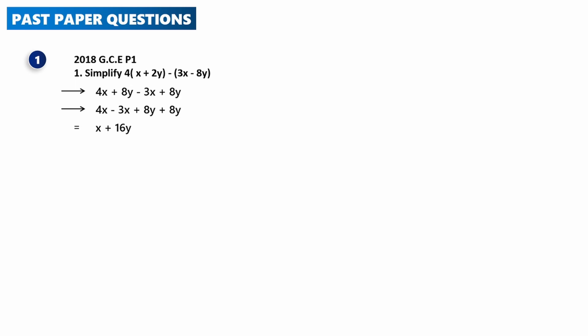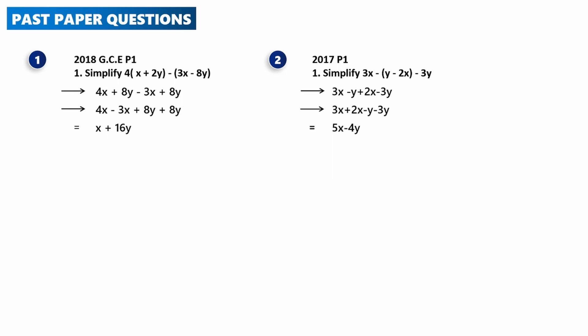2017 Paper 1: Simplify 3x − (y − 2x − 3y). The negative sign multiplies everything in the brackets: −y and −(−2x) = +2x. Expanding gives 3x − y + 2x − 3y. Grouping like terms: 3x + 2x = 5x, and −y − 3y = −4y. The final answer is 5x − 4y.